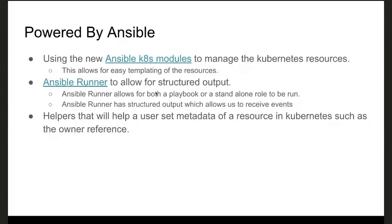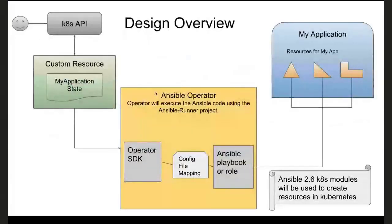We're also able to use Ansible Runner, which allows us to run a playbook or a standalone role. This means we can reuse roles and run them right from Ansible Runner, as well as a playbook. It also gives us structured output, which will help an operator author manage the status of their resource. We also have some helpers that hide the details of owner references and metadata of a Kubernetes resource.